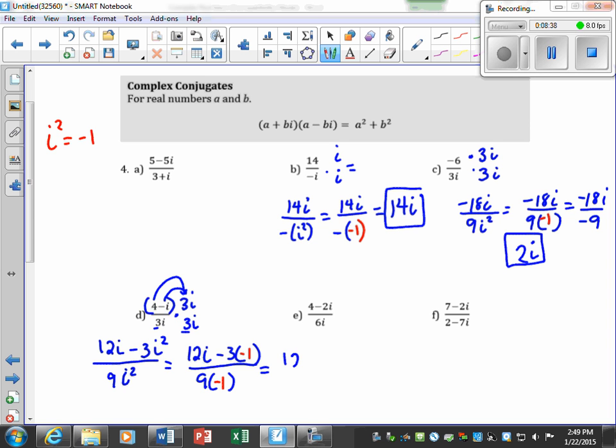So we will continue, we will get 12i plus 3 over negative 9. Okay, and we see that all of these have a 3 in them, so we can reduce, which is going to be, divide by 3 you would get a 4, divide by 3 you would get a 1, divide by 3 you would get a 3.